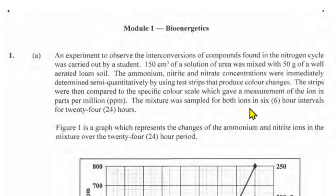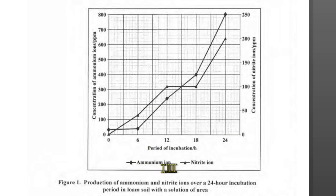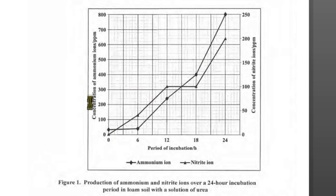The mixture was sampled for both ions in six-hour intervals for 24 hours. Looking at the graph, this is over a 24-hour period with six-hour intervals. On the x-axis we have the period of incubation in hours, but on the left side and the right side we actually have two different scales. We look at the key or legend to tell which ion is which. The diamond-shaped plot points represent ammonium, and the nitrite ions are represented by triangular points. When reading the graph, read the respective axes: the left y-axis is for ammonium, the right y-axis is for nitrite.